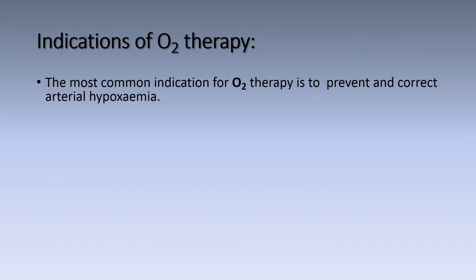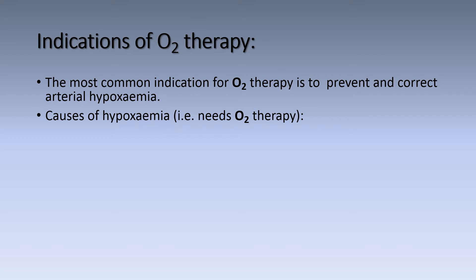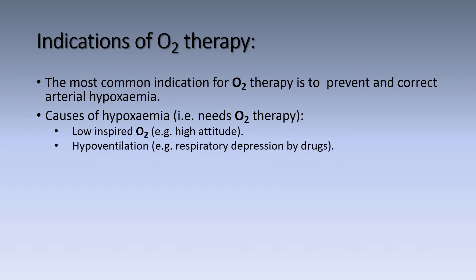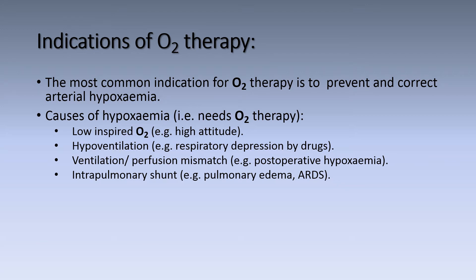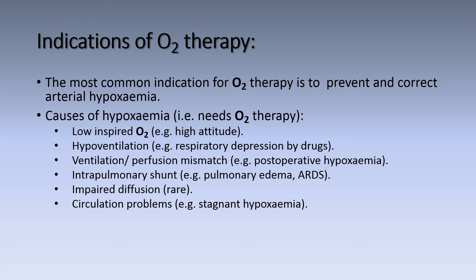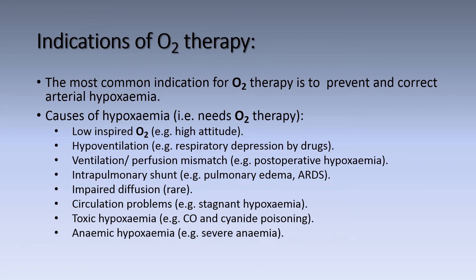Indications of oxygen therapy. The most common indication is to prevent and correct arterial hypoxemia. Causes of hypoxemia include: low inspired oxygen, e.g. high altitude; hypoventilation, e.g. respiratory depression by drugs; ventilation-perfusion mismatch; intrapulmonary shunt, e.g. pulmonary edema or acute respiratory distress syndrome; impaired diffusion, which is rare; circulatory problems, e.g. stagnant hypoxia; toxic hypoxemia, e.g. carbon monoxide and cyanide poisoning; and lastly, anemic hypoxemia, which occurs in severe anemia.